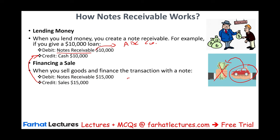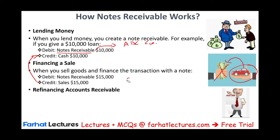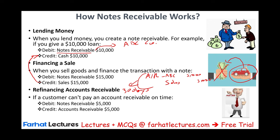Is there a third use of Notes Receivable? Of course — when an amount is past due. A company made a sale on credit, debiting Accounts Receivable for ABC Company and crediting Sales for $5,000. Thirty days later, the customer doesn't have money to pay. So you swap their Account Receivable with a Notes Receivable — you credit Accounts Receivable and debit Notes Receivable for ABC Company. Those are the three scenarios where a Notes Receivable is created.